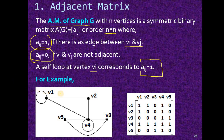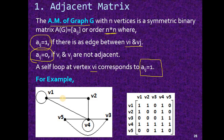Let us see one example. The graph is shown on the left-hand side of the screen. There are a total of 5 vertices: v1, v2, v3, v4, and v5. We have to construct the adjacency matrix. The adjacency matrix will have a total of 5 rows and 5 columns, since our matrix is an n by n matrix and the total number of vertices is 5. So the matrix will be 5 by 5.